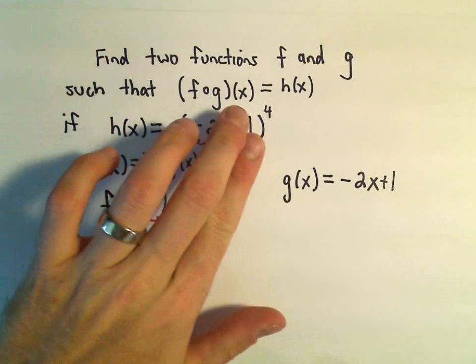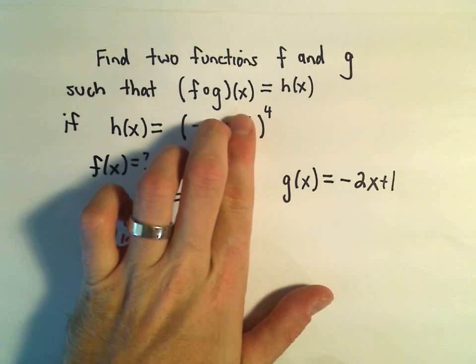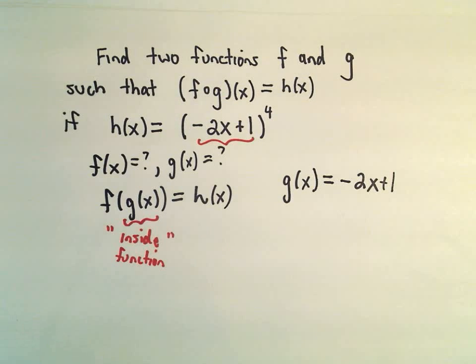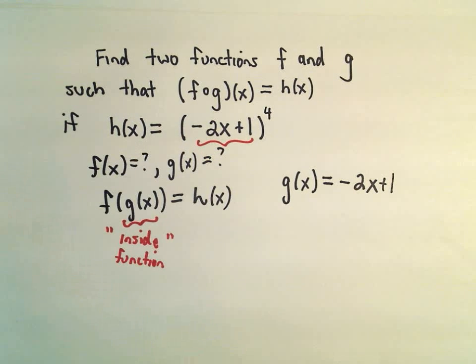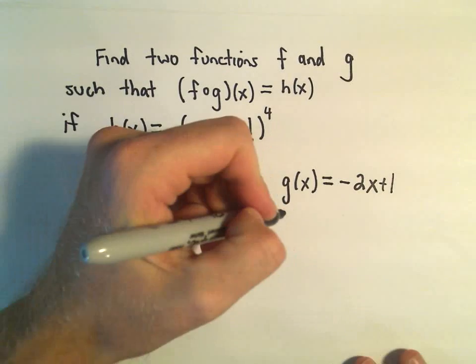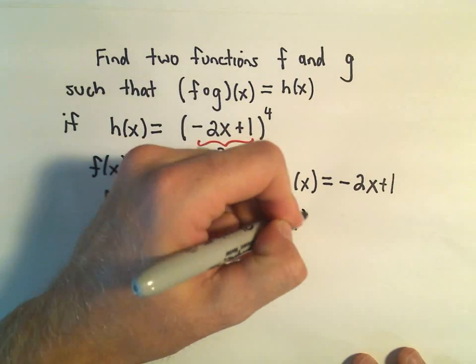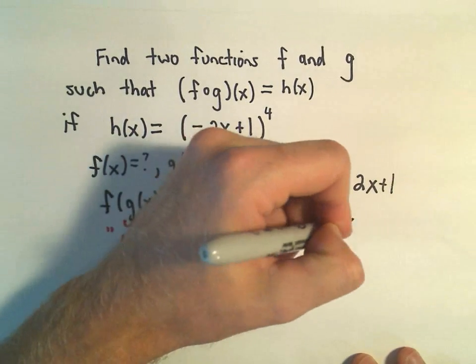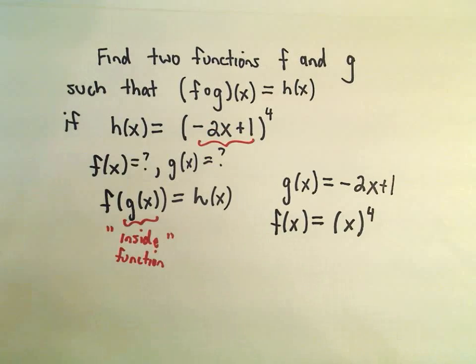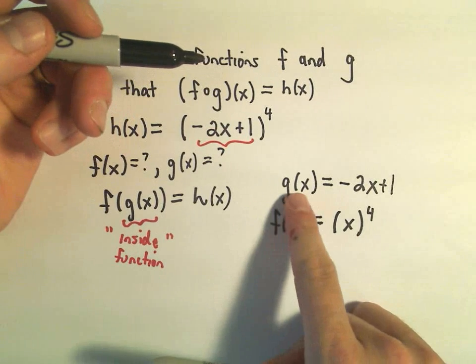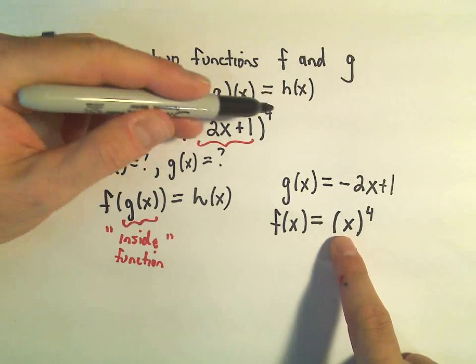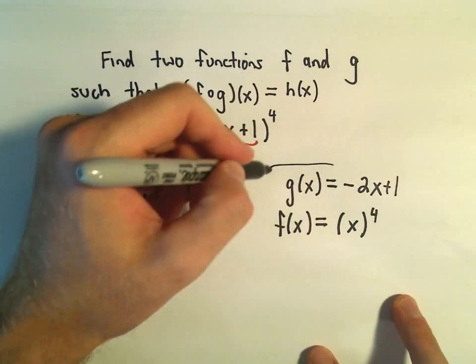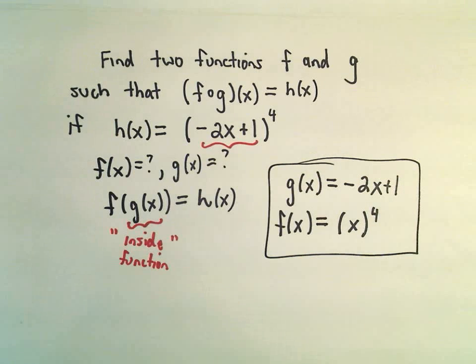And well, what are we doing to that stuff? What we're doing to that is we're raising it to the fourth power. So I think we can let f(x) be the function that takes something to the fourth power. Namely, we could let it be just x^4. Notice if we plug g(x), -2x + 1, into f(x), we would get this exact function back. So I believe these two functions would certainly do it for us.